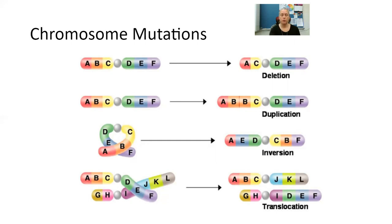In translocation, we've got ABC, DEF on one chromosome and G, H, I, J, K, L on another. What happens is we have a relocation and we get ABC, J, K, L on one, and G, H, I, D, E, F on the other. So J, K, L attaches to the non-homologous chromosome, and now we have two different chromosomes that, for whatever reason, have relocated their genetic pattern.